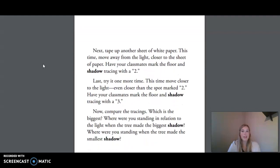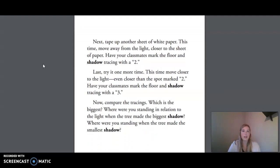Next, tape up another sheet of white paper. This time, move away from the light closer to the sheet of paper. Have your classmates mark the floor and shadow tracing with a 2. Last, try it one more time. This time, move closer to the light, even closer than the spot marked 2. Have your classmates mark the floor and shadow tracing with a 3.